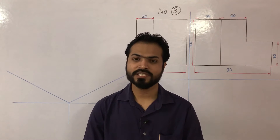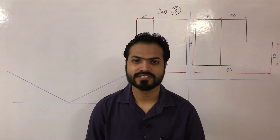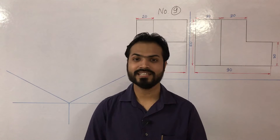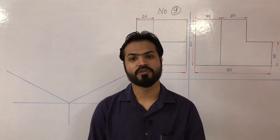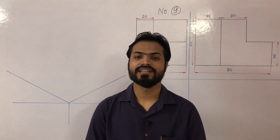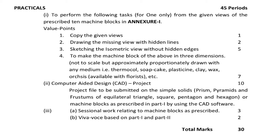Hello everyone. In today's class we will discuss the practical work of engineering graphics for class 12 CBSE students. We will see what exactly we are required to do in practical work for file work and at the day of practical. In our practical we have three main parts: first, machine block for 15 marks; second, computer aided design CAD project for 10 marks; and third, sessional and viva for 5 marks. Total is 30 marks.